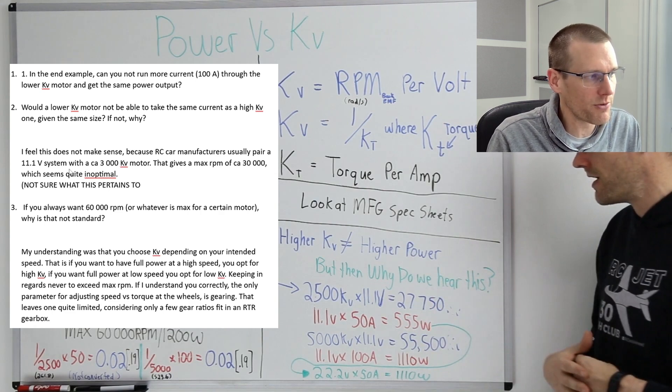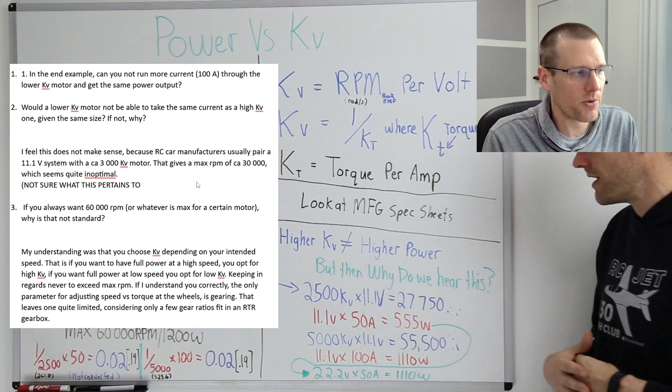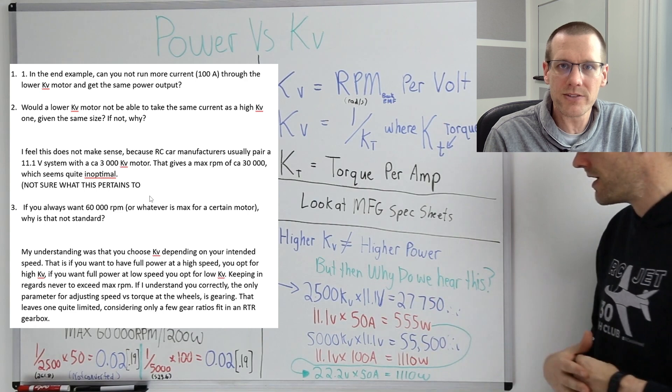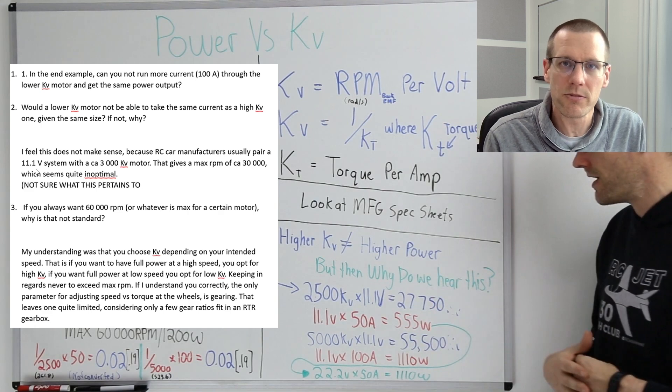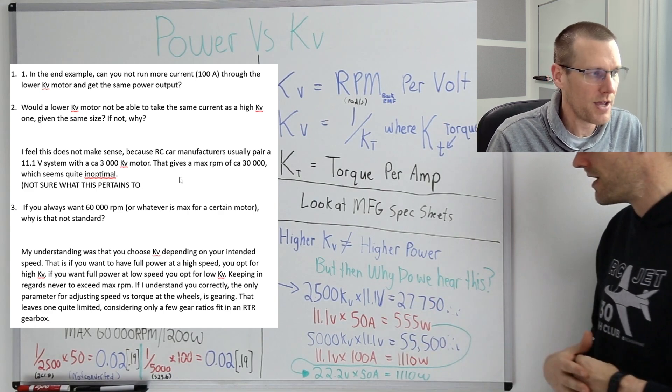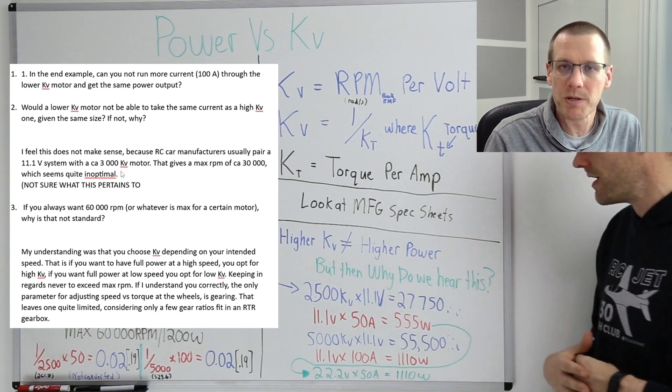Let's come back to the whole 11.1 volt system with the 3000 KV motor. RC car manufacturers, what it's saying here is that they typically pair those two systems together. The 11.1 volt battery voltage with a 3000 KV motor. So really when it comes down to it, this year, the 11.1 volt system being paired with a 3000 volt KV motor from RC car manufacturers, it definitely is not optimal.